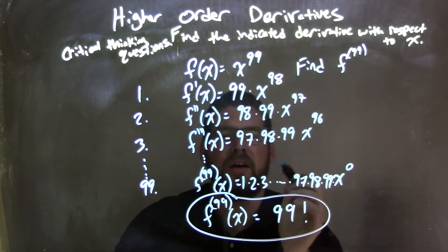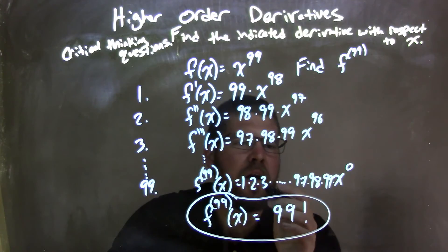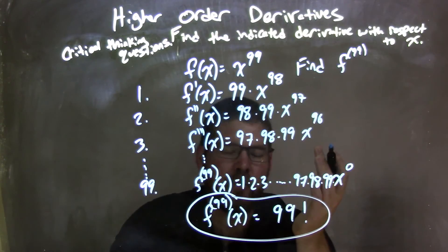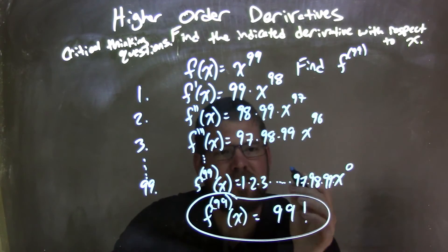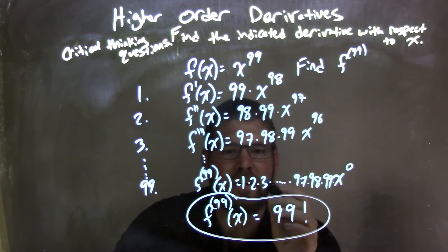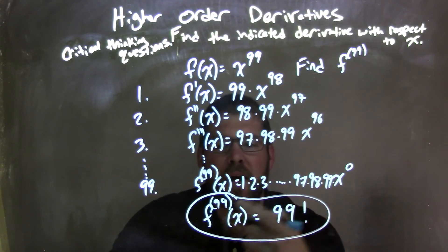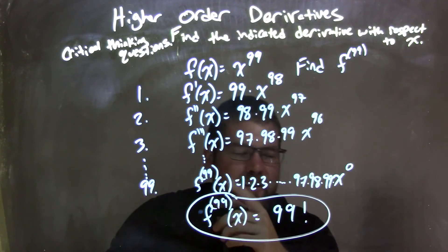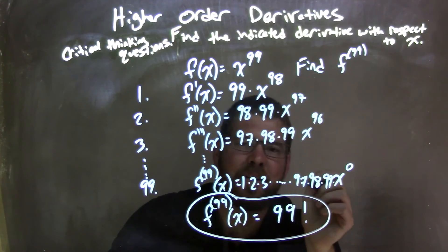And so I recognize that the 99th derivative of our function is just 1 times 2 times 3, all the numbers multiplied up to 99. Another way we know to write that is factorial - 99 times 98 times 97, 96, times 95, times 3 times 2 times 1. So I can rewrite my final answer as f to the 99th derivative of x equals 99 factorial.